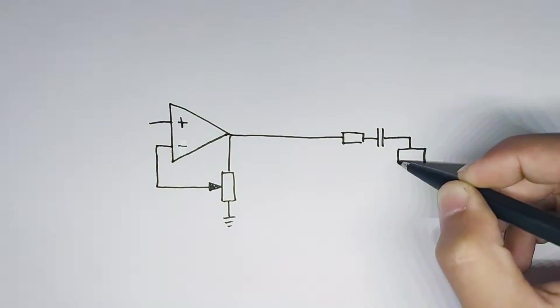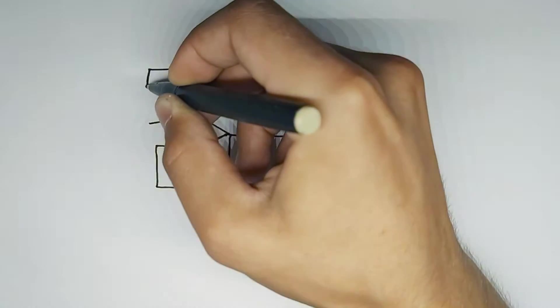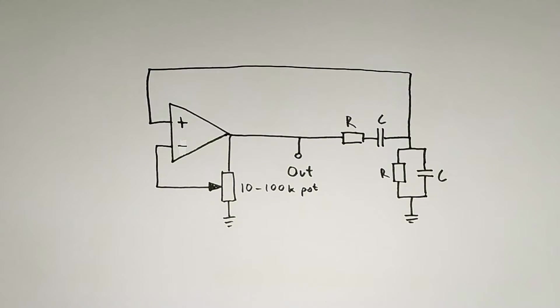After the modification, this is the final result. On the left we have the amplifier and on the right we have the filter. Now that we have our schematic, we can proceed to build the circuit on a breadboard.